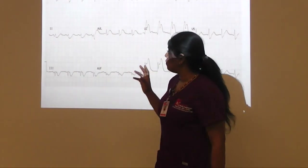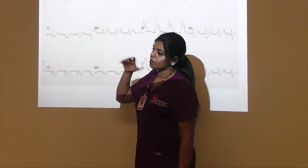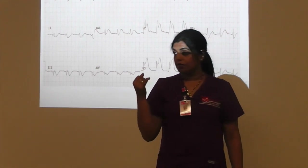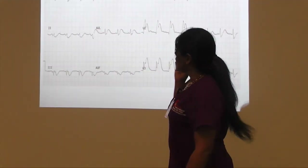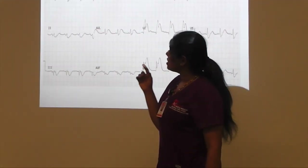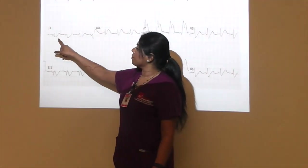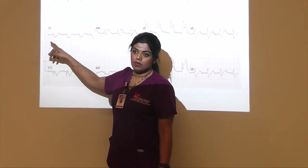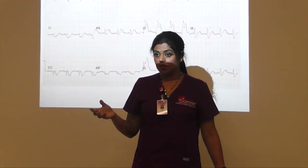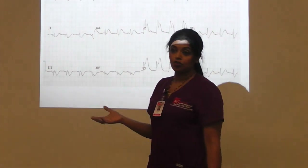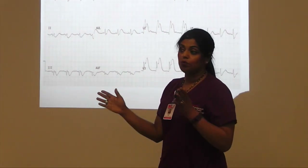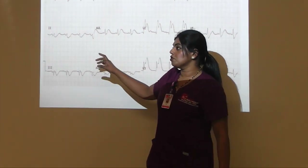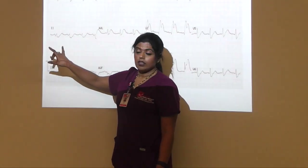I always start off by looking at what rhythm it is — where are the P waves coming from? Then you look and see if there is a QRS for every P wave. Are we missing QRSs? Are we missing P waves? Are there extra QRSs? Is there a one-to-one relationship? That's where you start with your rhythm.